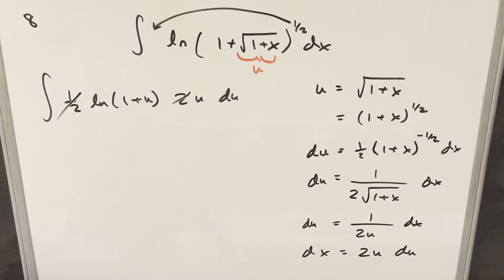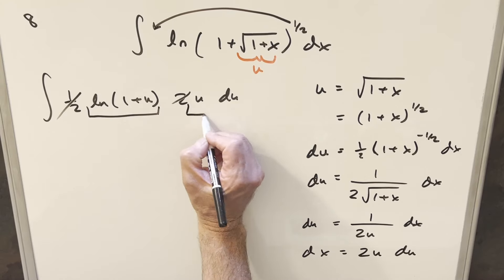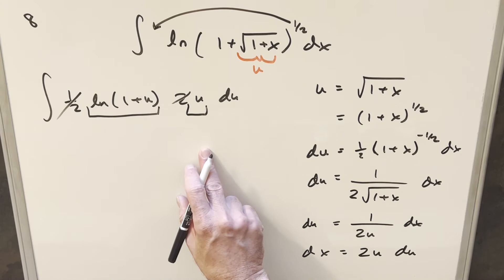But then I can cancel 2 with 1 half here, and then now this is actually pretty good, we're set up for integration by parts. We've got two things, I think what we'll do is we'll differentiate the natural log, and we can integrate u, and we'll use the di method for this.